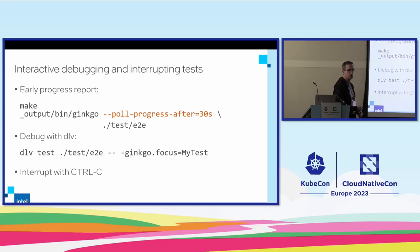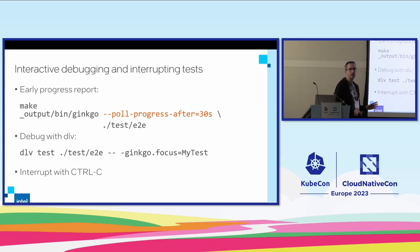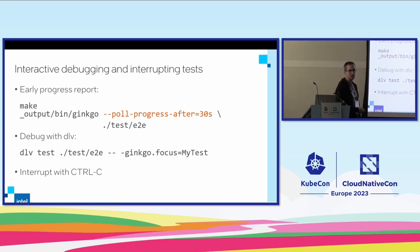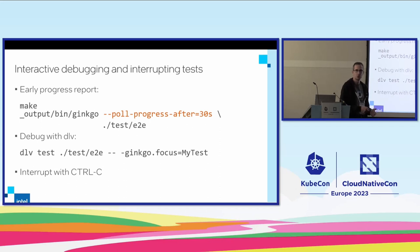You can also debug with Delve if you want to do it interactively. This make command ensures that you build the right Ginkgo — there are version dependencies between the Ginkgo CLI and the test suite, so it's better to use one that gets built together with Kubernetes. It is now safe to interrupt at any time with Ctrl-C because we have much better cleanup handling now in Kubernetes than we had before.